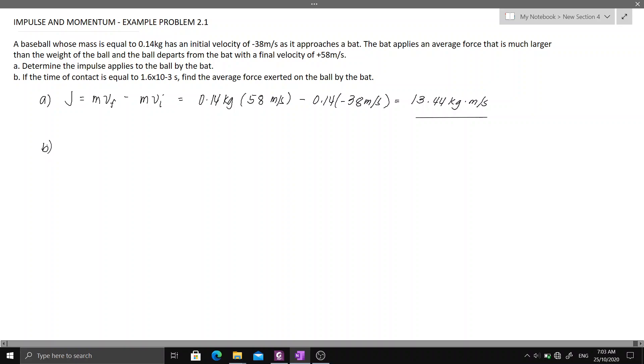We can get the average force exerted since we know that the impulse J is equal to the average force times the time elapsed T. So we have calculated the impulse which is equal to 13.44 kilogram meter per second, and the average force F which we are trying to solve for. The time elapsed T is equal to 1.6 times 10 raised to negative 3 seconds.